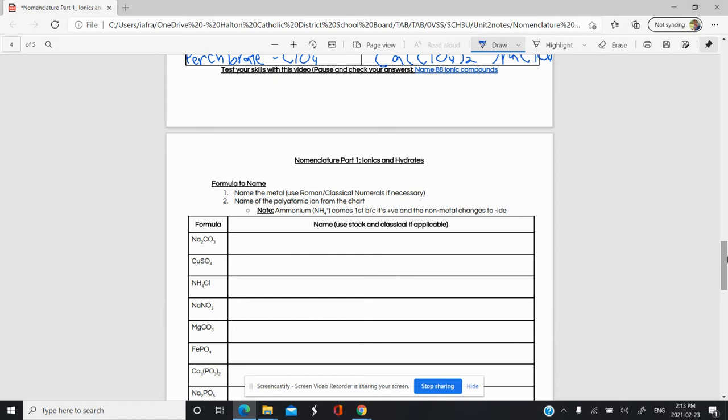The general rule is that we simply name the metal first in our compound, and then we name the polyatomic ion according to how it should be named without changing the ending or anything about it. We'll start with some simple ones, and then we'll see some where we have to do a little more work.